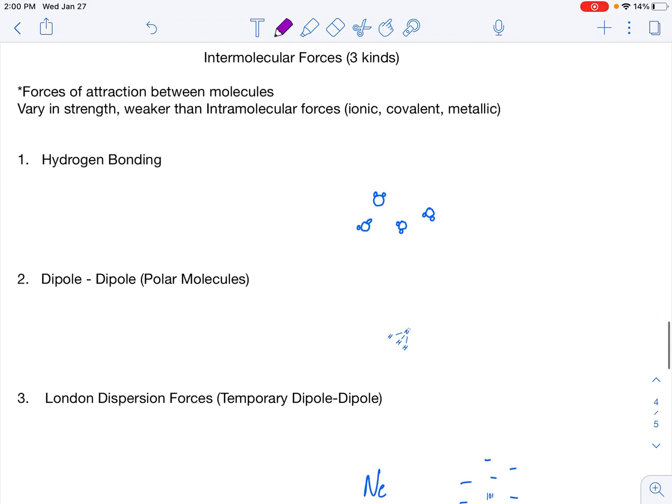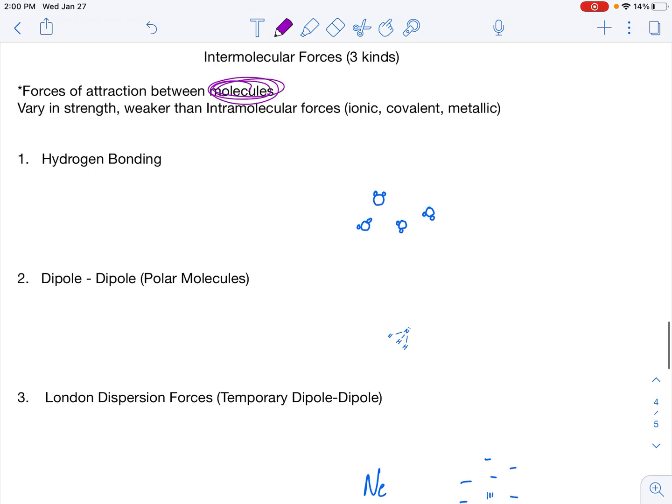Alright. Intermolecular forces. We got three kinds, and that's going to be the end of this lecture. These are forces of attraction between molecules. Molecules only, not ionic things, not metallic bonded things. Just molecules. Molecules have covalent bonds. That's how this works. Now, they vary in strength, and they're always weaker than intramolecular forces. An intramolecular force is an ionic, covalent, or metallic bond. These have a very, very strong force of attraction. So these don't have as strong of a force of attraction as those intramolecular. They're just intermolecular.